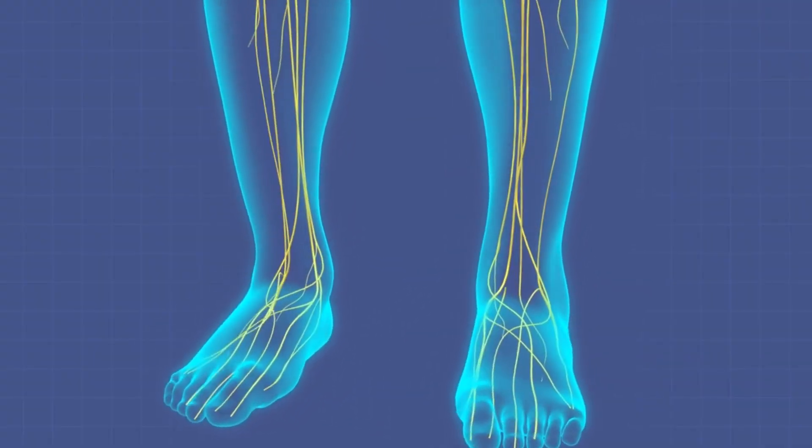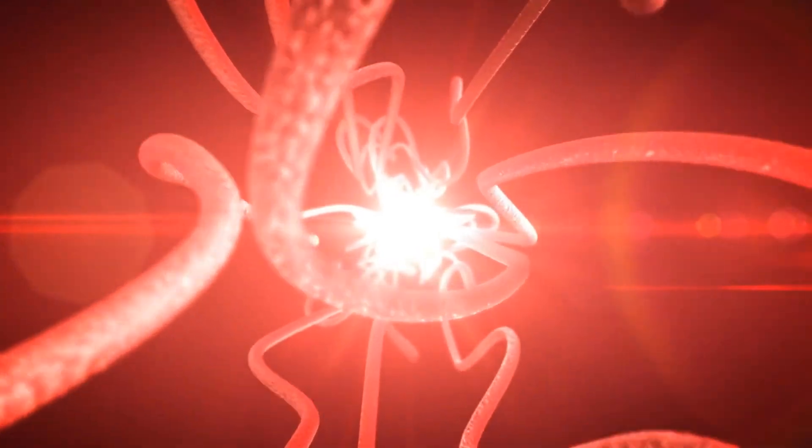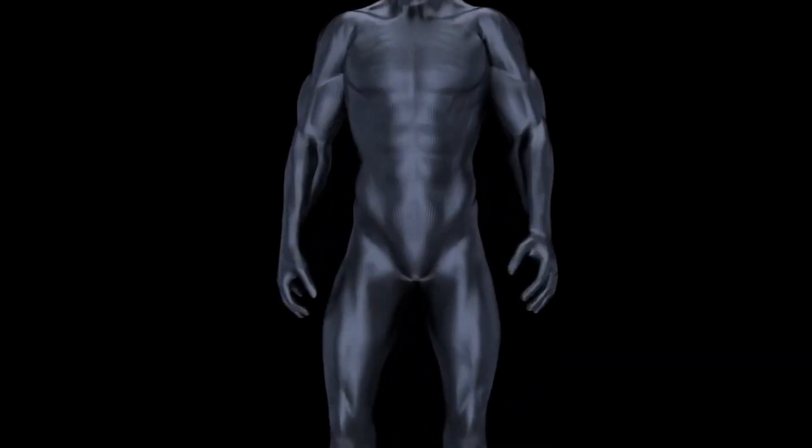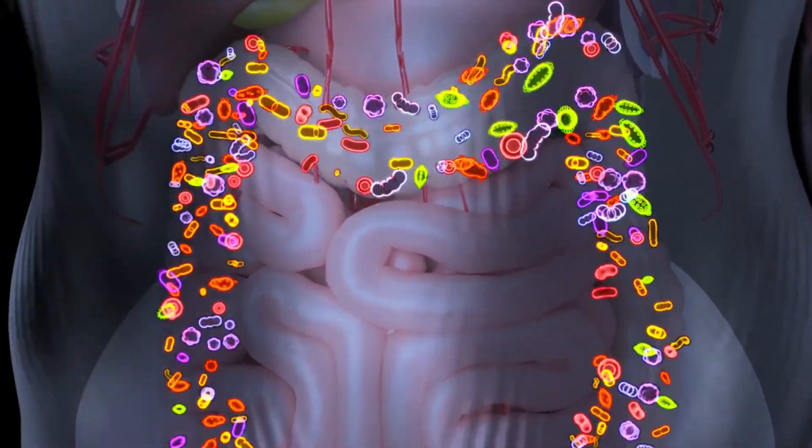The vagus nerve, the telephone line. Imagine the vagus nerve as a telephone line connecting your gut and brain, facilitating direct communication between the two. The gut microbiota produces signaling molecules that travel along this neural highway, sending messages to the brain.